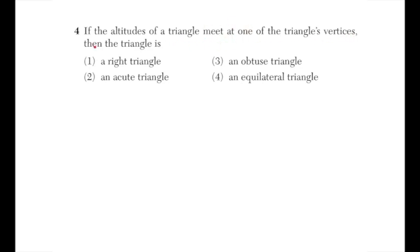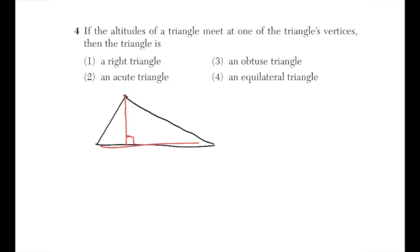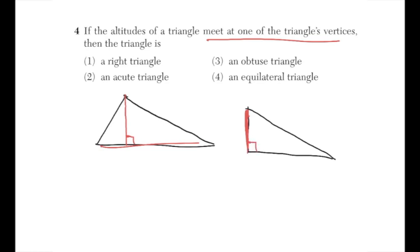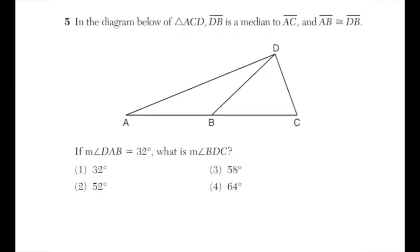Question number four: if the altitudes of a triangle meet at one of the triangle's vertices, then the triangle is a right triangle, an acute triangle, an obtuse triangle, or an equilateral triangle? The altitude creates a 90-degree angle on the opposite side. If the altitude meets at another vertex rather than the base, that vertex itself must be the right angle. The correct answer is a right triangle.